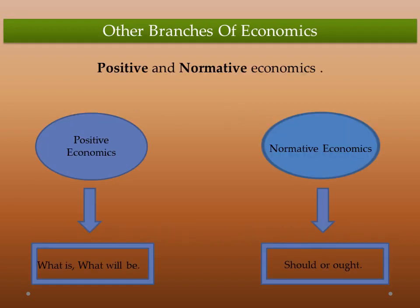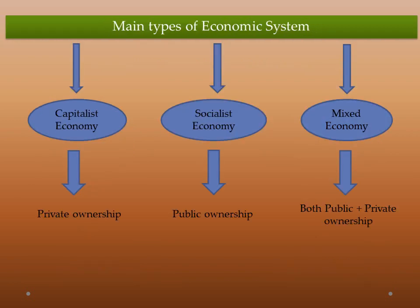Other branches of economics: positive economics and normative economics. In positive economics, we study what is or what will be. In normative economics, we study what should or should not be. For example, positive economics says a country's GDP growth rate is 9%. But normative economics will say the country's GDP growth rate is not sufficient to achieve the target and it should be above 10%. That is the main difference between positive and normative economics.